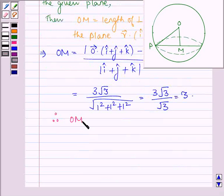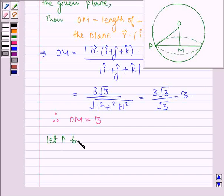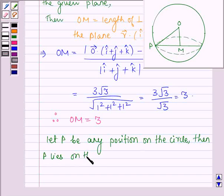Therefore OM is equal to 3. Now in this figure, let P be any position on this circle. Then P lies on the plane as well as on the sphere.